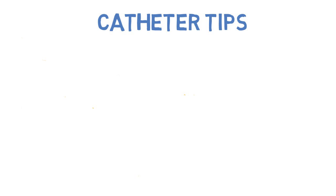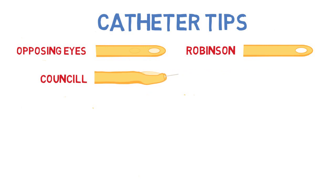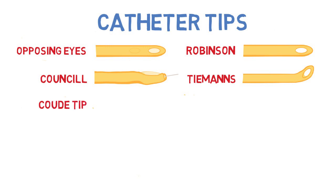Depending on the indication for the catheter, there are many different types of tips to choose from. Your traditional catheter usually has opposing eyes; depending on the manufacturer, this might be the common catheter available, or the Robinson, which has the drainage eyes in line with each other. Urologists will often ask for a council tip catheter — this means there is a hole at the very end of the tip, allowing the catheter to be placed over a guide wire, and a council tip can be combined with other catheter tip types. A Tiemann catheter is used specifically for males with a possible enlarged prostate or obstruction; it has a slight curvature to the tip which helps navigate around the membranous urethra. The coude is very similar to the Tiemann and has a curvature to help navigate lower urinary tract obstruction; the terms Tiemann and coude are generally used interchangeably.